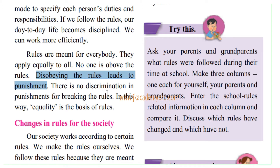There is no discrimination in punishment. No discrimination means there is no difference in punishing the person — whoever the person is, if they have broken the rules, that person will be given punishment. In this way, equality is the basis of rules. Rules are made to be applicable to all equally, whoever that person could be.